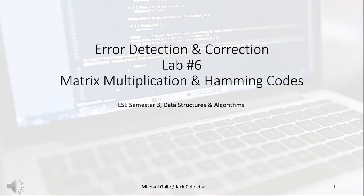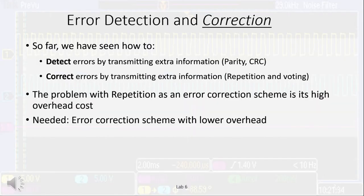Welcome to the final lab in our error detection and correction series. In this lab, we'll set up a program for matrix multiplication, and then we'll use it to generate Hamming codes. So far in our series, we've seen how to detect errors by transmitting extra information, as in the parity and CRC labs, and how to correct errors in the repetition and voting lab. The problem with repetition is the high overhead cost — 200% with a repetition rate of 3. What we need is an error correction scheme with a much lower overhead, and that's what we'll learn about today.